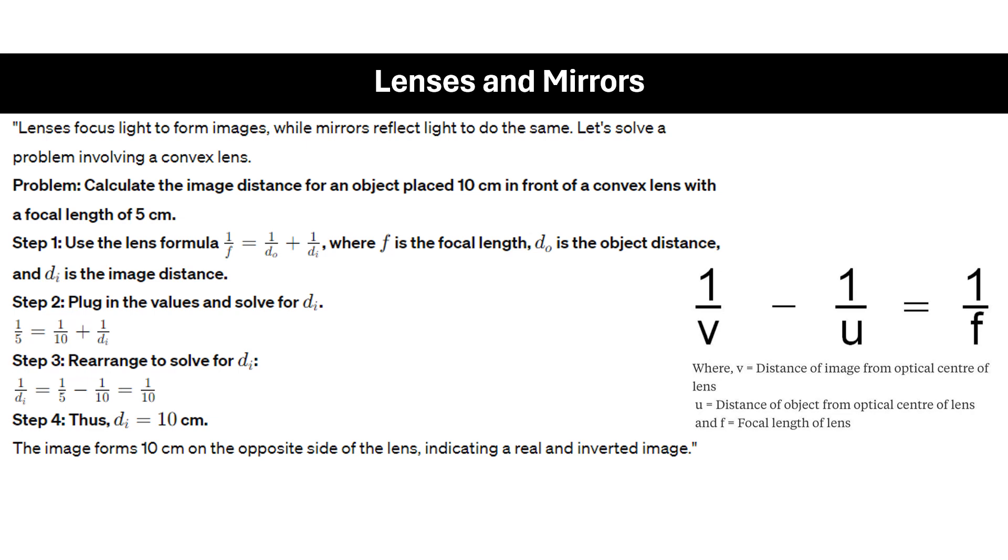We just plug in the values and solve for d sub i. So it would be 1 over 5 equals 1 over 10 plus 1 over d sub i. Then rearranging to solve for d sub i: 1 over d sub i equals 1 over 5 minus 1 over 10 equals 1 over 10. Then you get the reciprocal of that, which would be equal to 10 centimeters.